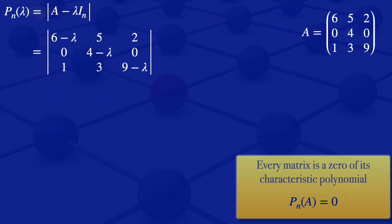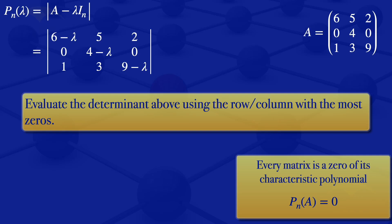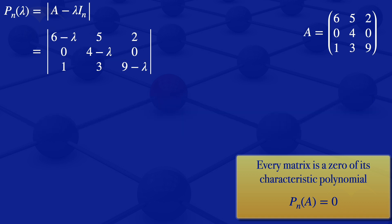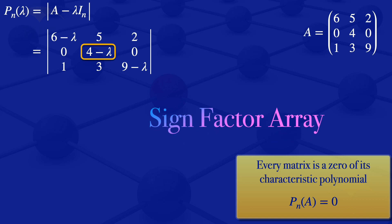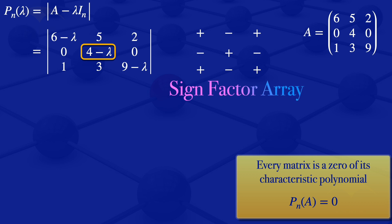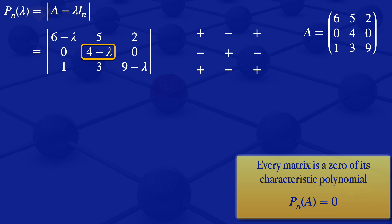We can now evaluate that determinant using the row or column with the most zeros. In this case, the second row has two zeros, so that's the one I will use. Looking at the element 4 minus lambda, and noting the array of positive, negative, positive, negative signs, the 4 minus lambda is sitting on a positive. So I will close the row and column containing the 4 minus lambda, noting that it sits on a positive.